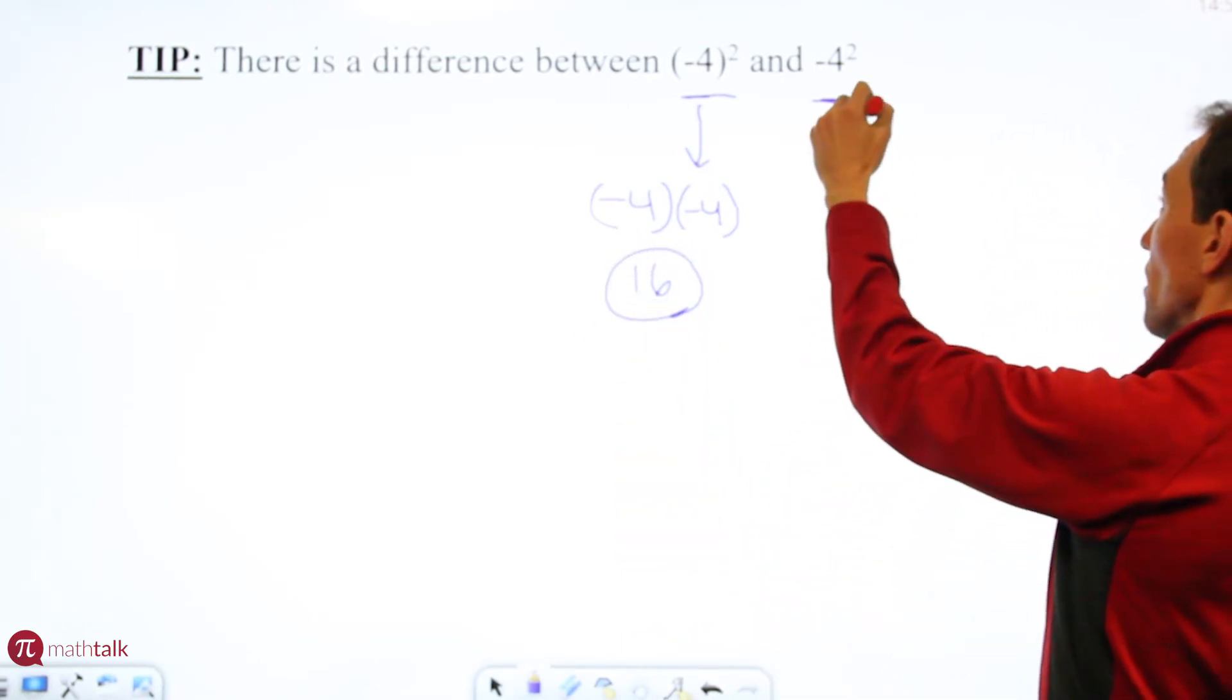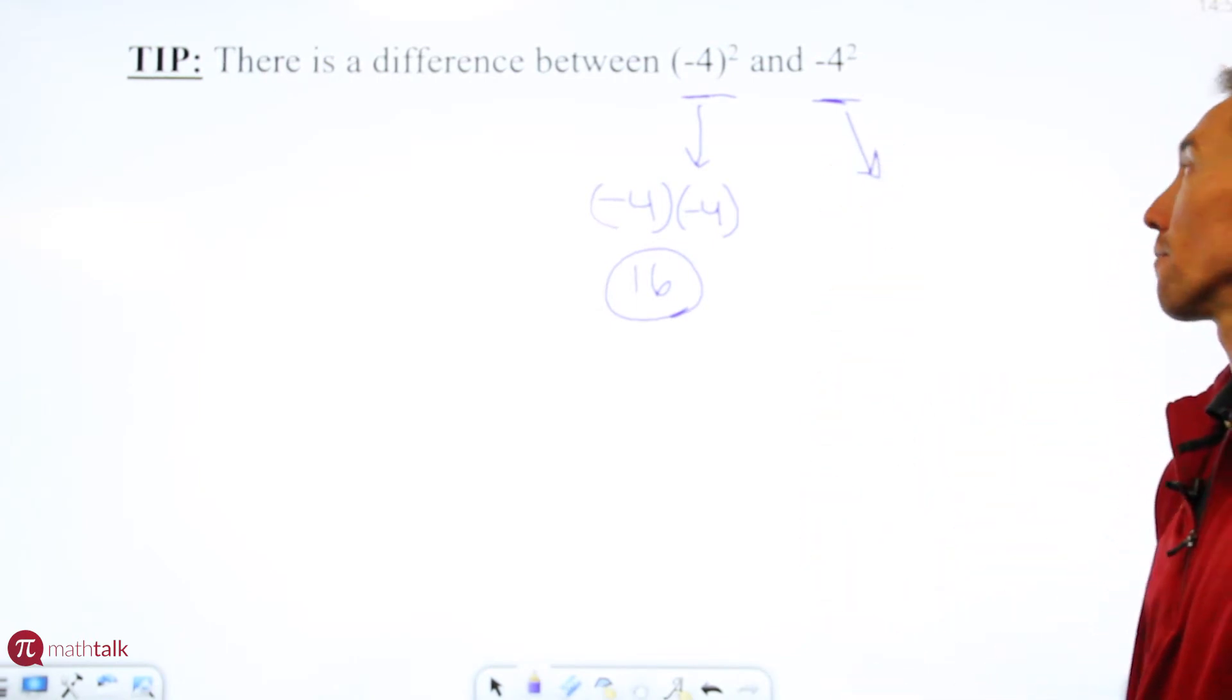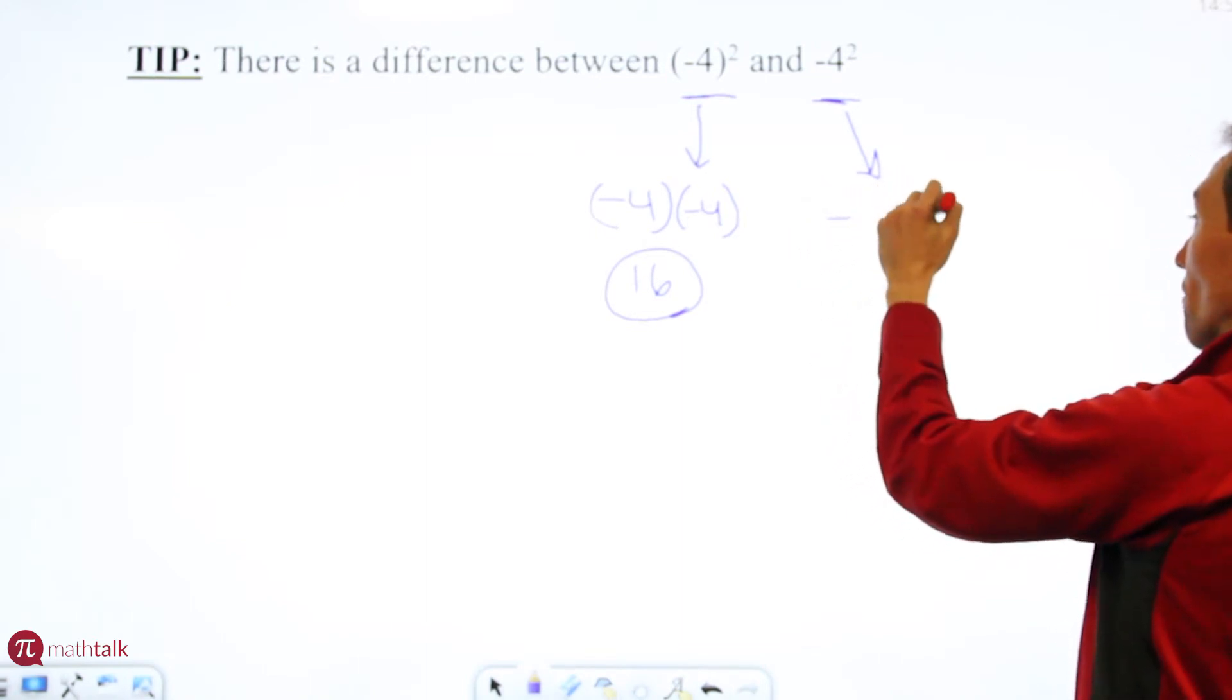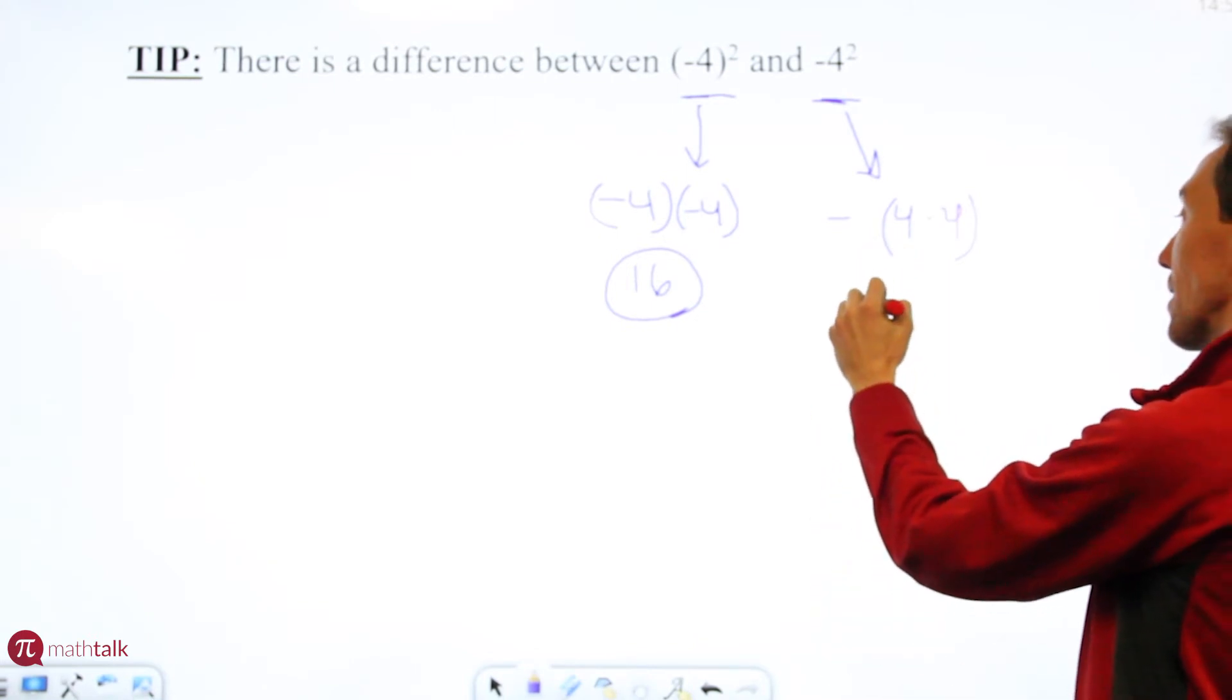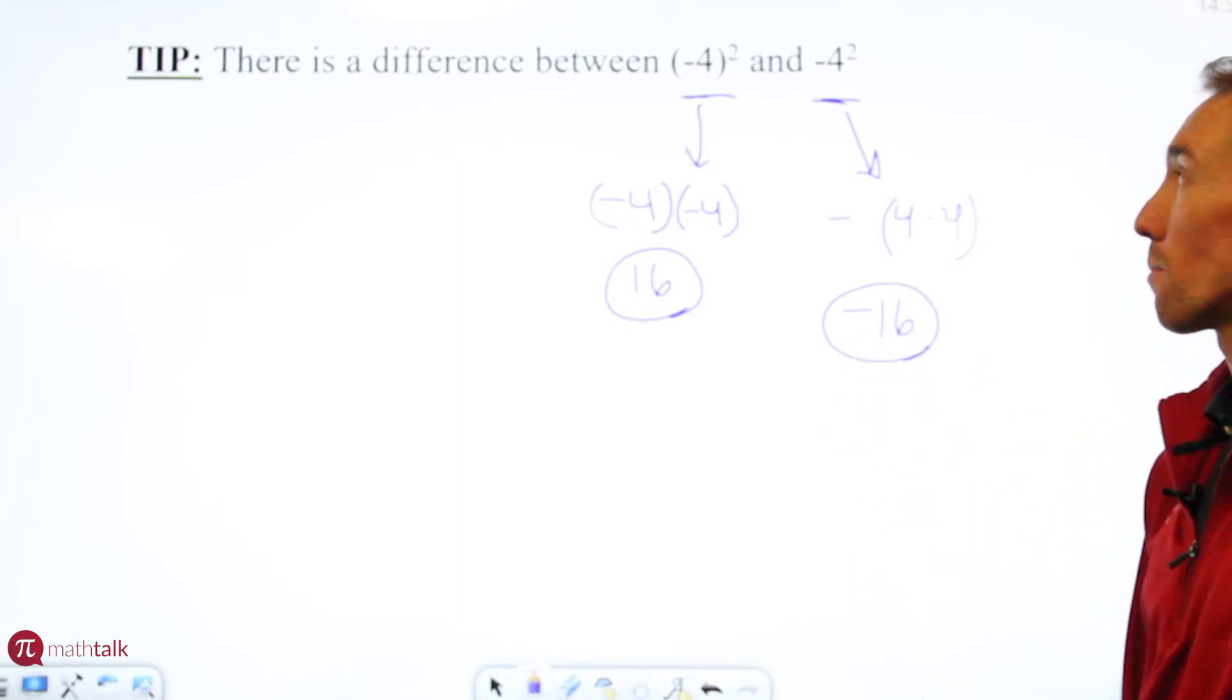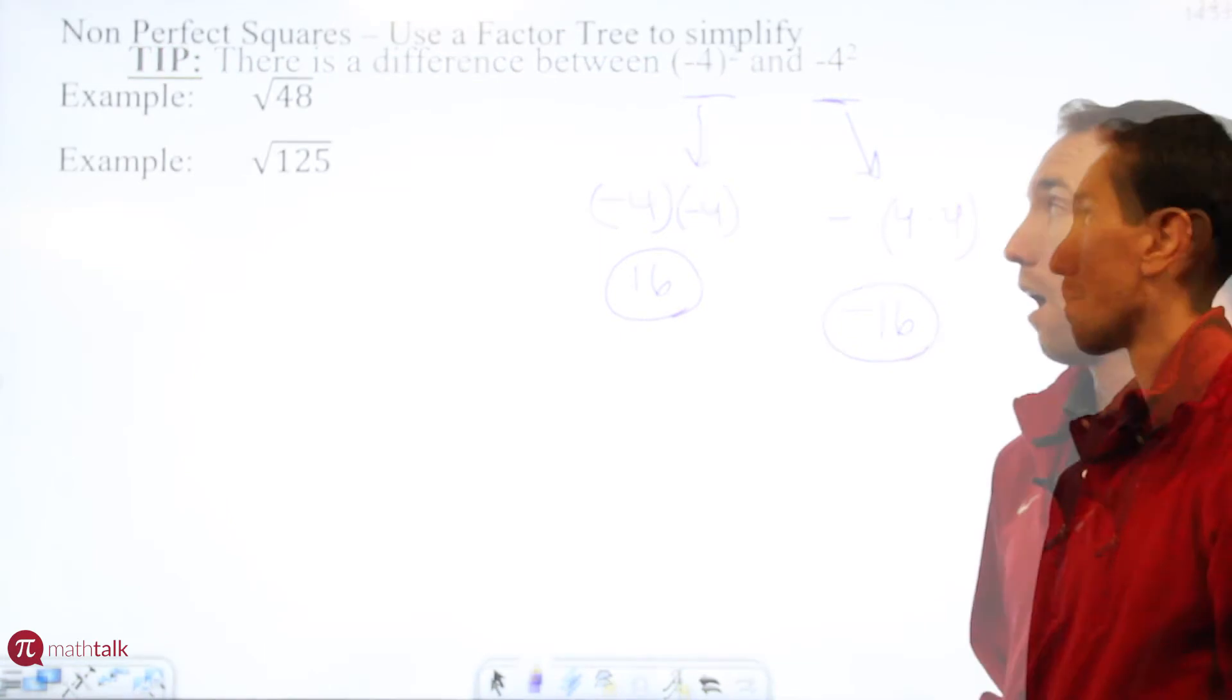For the other one the difference is it's asking for what is the negative of 4 squared. So it's really what is the negative of 4 times 4, and 4 times 4 is 16 but the negative of 16 is negative 16.